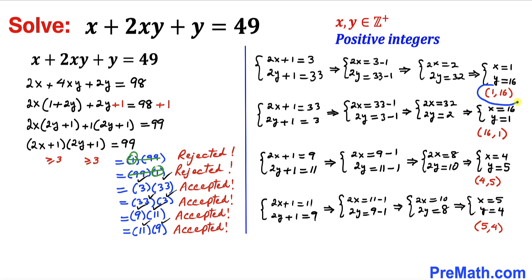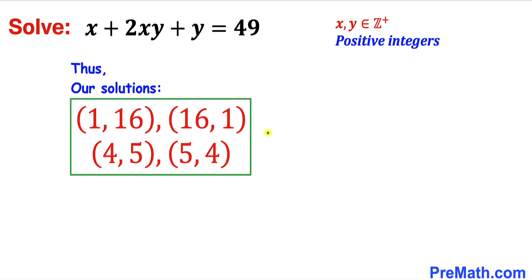These are our four final solutions: (1, 16), (16, 1), (4, 5), and (5, 4). Thanks for watching and please don't forget to subscribe to my channel for more exciting videos.